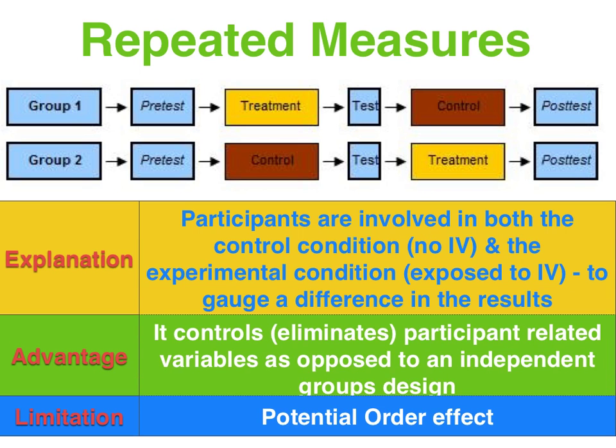When a repeated measures design is used, participants are involved in both the control condition — where they're not exposed to the IV — and the experimental condition — where they are exposed to the IV — enabling a comparison between the results. The advantage is we don't have to worry about participant-related variables, so it is the most effective of the three because it actually eliminates participant-related variables.